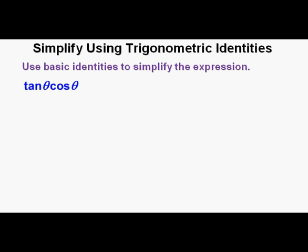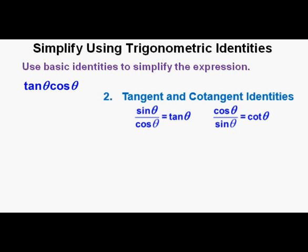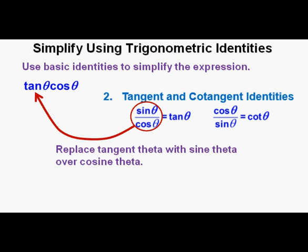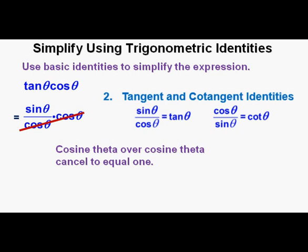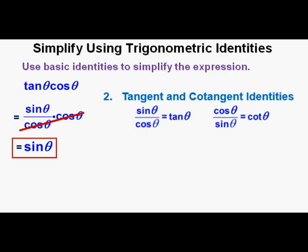Here's the first problem. Use basic identities to simplify the expression: tangent theta times cosine theta. As a rule of thumb, I like to go to my identities to get everything in terms of sine and cosine and try to simplify from there. We're going to replace tangent theta with sine theta over cosine theta. We now have sine theta over cosine theta times cosine theta. Cosine theta divided by cosine theta cancels to equal 1, and we bring down what's left — sine theta — which we box in as our correct answer.